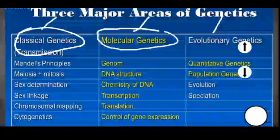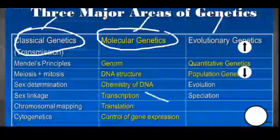The second major area of study under genetics is molecular genetics. Molecular genetics deals with the study of our genetic material — it covers the building blocks of DNA, abnormalities in DNA, and the study of protein synthesis and any abnormalities that could occur in that process. You can see this includes transcription and translation, which are the processes of protein synthesis.